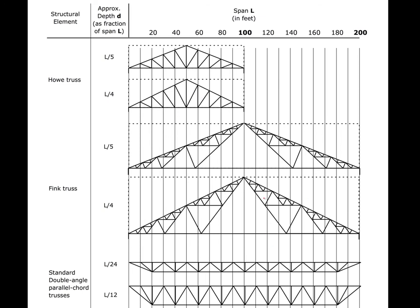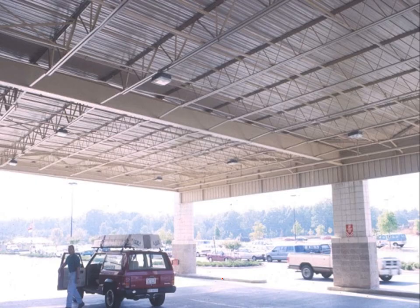We've talked about the Howe truss and the Fink truss; now we're going to talk about the meat and potatoes of architecture — the parallel chord truss, typically fabricated as a standard double-angle parallel chord truss. The fabricator sizes all members and welds, so they're selling you a finished product that meets whatever span and load specifications you provide.